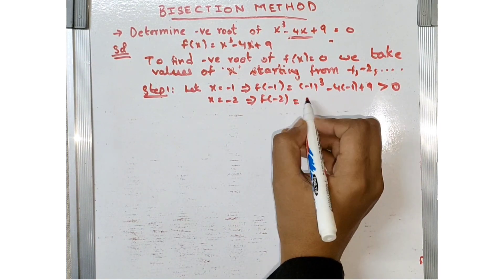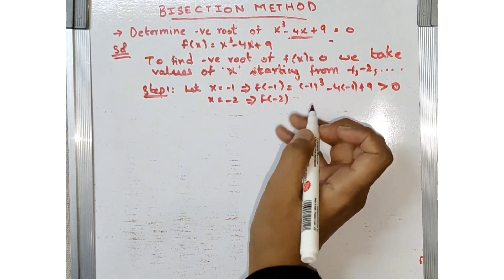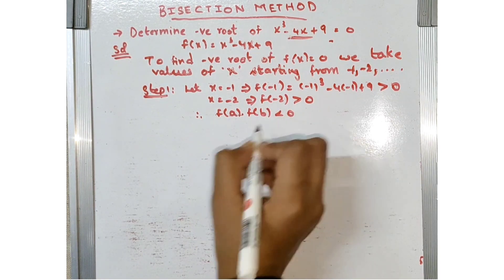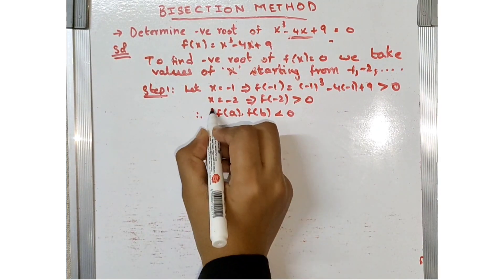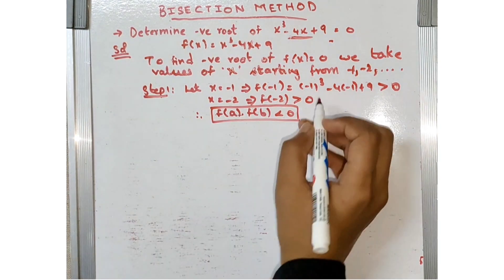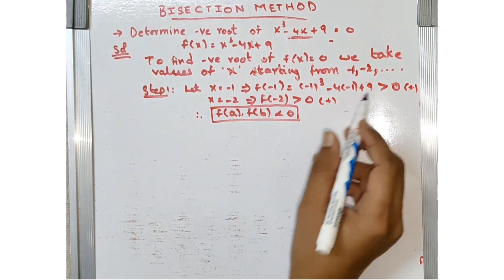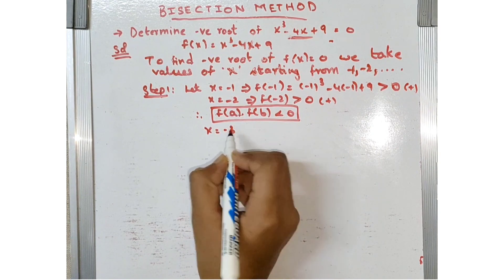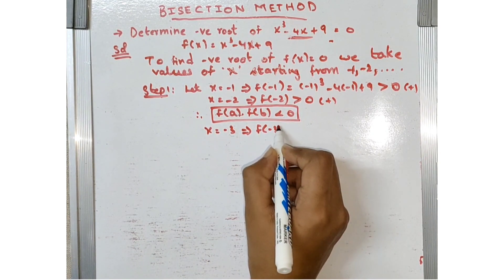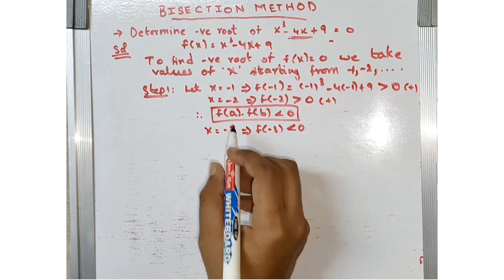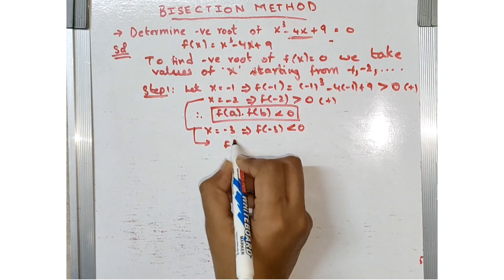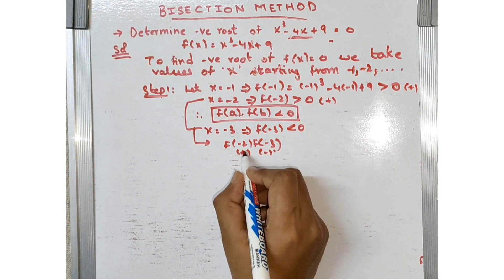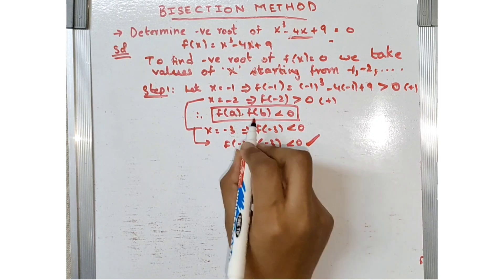Now consider x = -2. Substituting in the equation gives f(-2) greater than 0. We need f(a) × f(b) < 0. f(-1) × f(-2) is positive × positive = positive, which is greater than 0 — so we can't use these. Consider x = -3: substituting gives f(-3) less than 0. Now f(-2) × f(-3) is positive × negative, which is less than 0. Therefore the condition is satisfied.